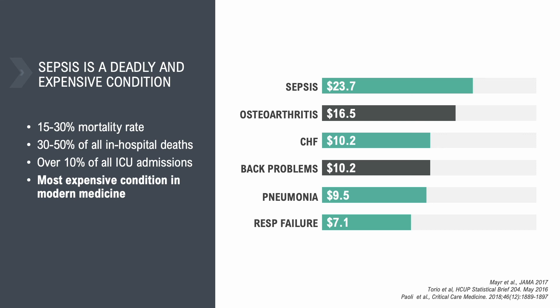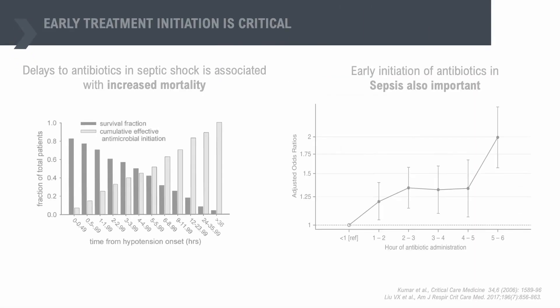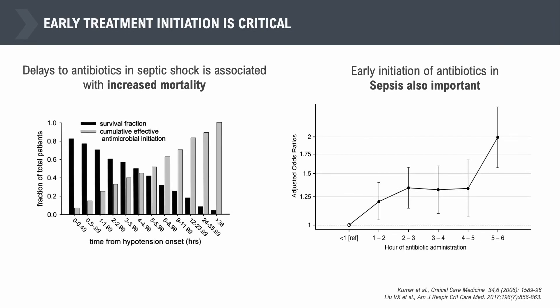As you all know, sepsis is a deadly condition. It has a 15 to 30% mortality rate and is responsible for 30 to 50% of all in-hospital deaths. It represents over 10% of all ICU admissions. Sepsis is also very expensive — in fact, it is the most expensive condition in modern medicine. In United States hospitals, sepsis was responsible for nearly $24 billion in annual costs. Overall, we understand that the earlier we treat sepsis, the better the outcomes.